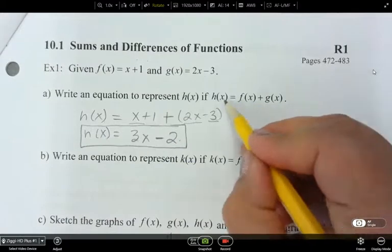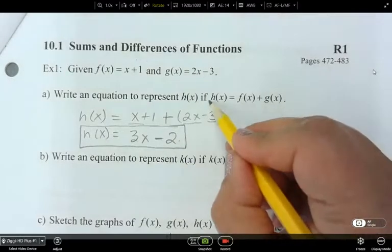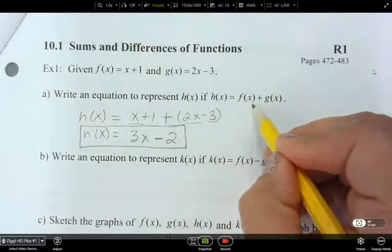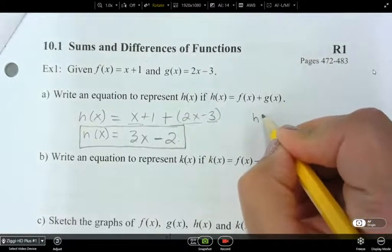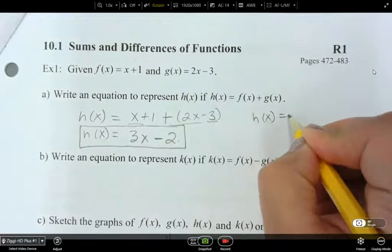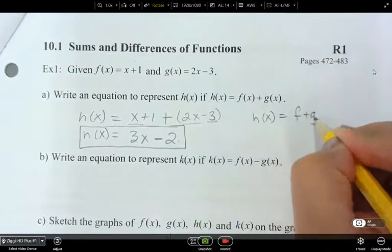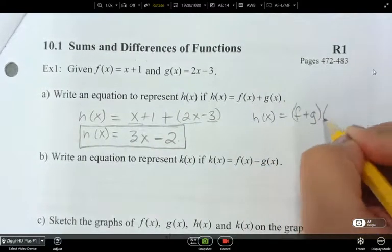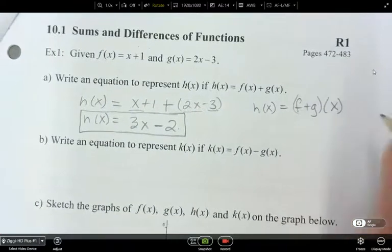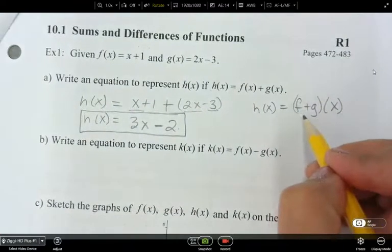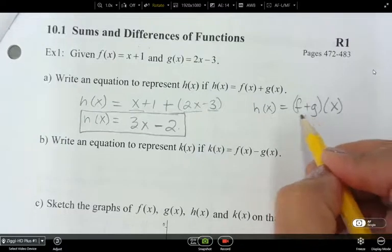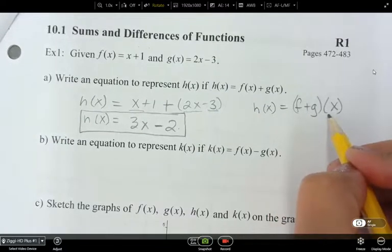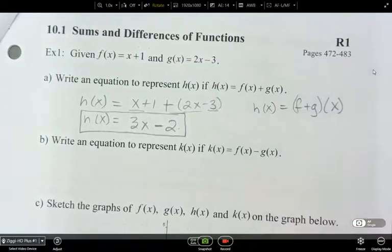Now, just a little side note that we have h of x expressed as f of x plus g of x written out separately, right? You could also have h of x written out like this. So f plus g in brackets, and then of x. So adding the two functions together, you can also see the notation like this. So where the f and g are adding, and then that's both a function of x.